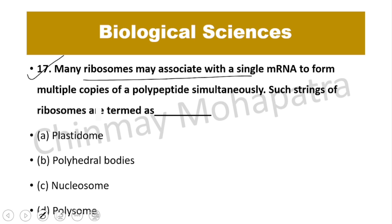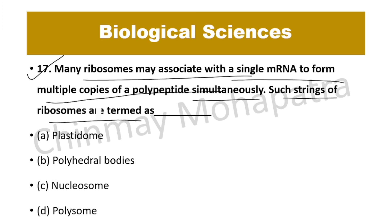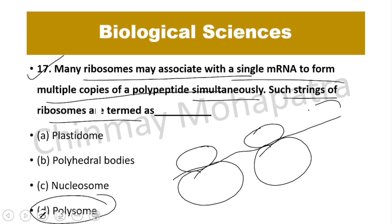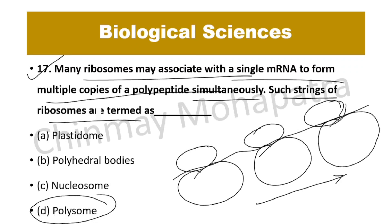Question number 17: Many ribosomes may associate with a single mRNA to form multiple copies of a polypeptide simultaneously during protein synthesis. Such a string of ribosomes is called a polysome. When multiple ribosomes participate in protein synthesis along the same mRNA, that arrangement of ribosomes is called a polysome.